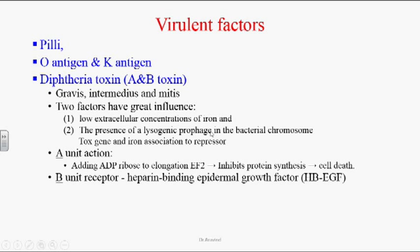The second factor is the presence of a lysogenic prophage in the bacterial genome. The lysogenic prophage is the viral genome integrated with the bacterial chromosome. This viral genome has a tox gene that stimulates diphtheria toxin production. Normally the tox gene is suppressed by a repressor gene present in Corynebacterium diphtheriae, which is activated in the presence of iron. When iron is unavailable, the repressor is inhibited, the tox gene activates, and the organism starts producing diphtheria toxin.